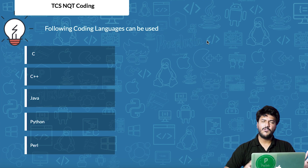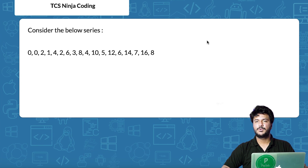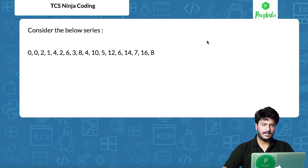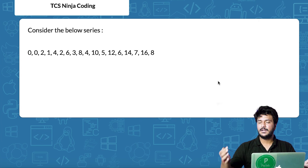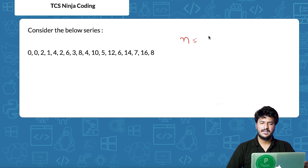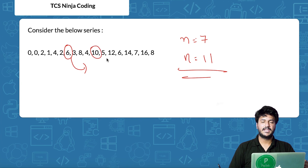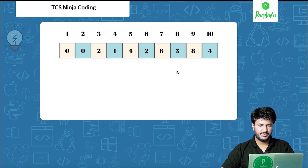First I'll explain the algorithm and logic on how to solve the program, then we'll look at the code. This question was asked in the TCS Ninja or NQT exam last year. You are given a series and must print a particular number in it. For example, if the user inputs N=7, you print the seventh number in the series; if N=11, you print the eleventh number. I'll explain how the series works further in the video.